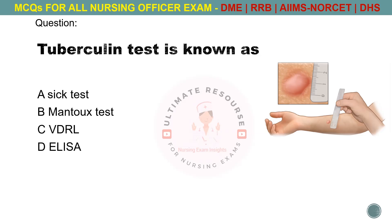Tuberculin test is known as. Options are A. Schick test, B. Mantoux test, C. VDRL, D. LASR. The answer is B. Mantoux test.